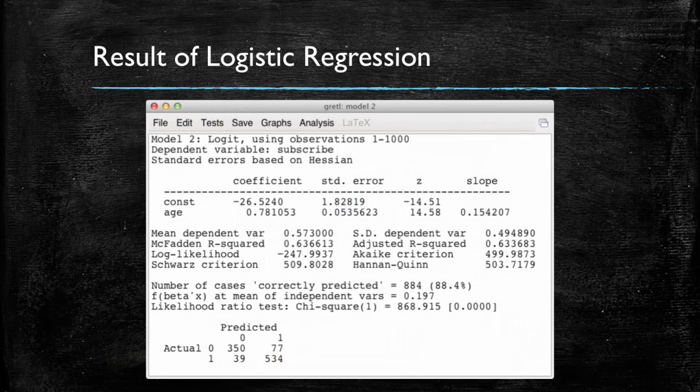And let me show you the output of a logistic regression in Gretel. You can see that we have the coefficient for the intercept and the slope, the beta 0 and the beta 1, but how we interpret these coefficients is different. We will discuss the interpretation of the coefficients in another video.